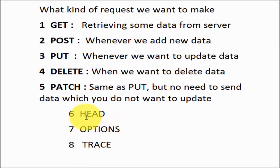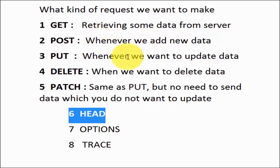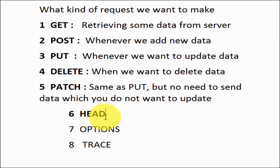Now we have 3 more methods: HEAD, OPTIONS, and TRACE, which we use very rarely. HEAD is used whenever you want to get only the header in the response. When we send a request to the server, we get two sections — one is the header (containing cookies, content type, etc.) and the other is the body (the actual response). HEAD is similar to GET but we get only the header, not the body. This is useful when we want to check whether we are getting the correct response code without validating the body.